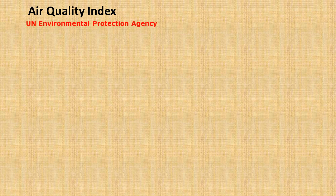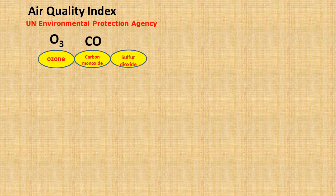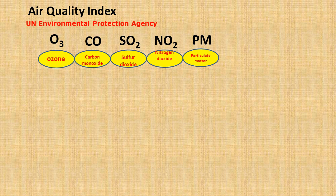The United Nations Environmental Protection Agency takes into account five pollutants while calculating this index. These are ozone, carbon monoxide, sulphur dioxide, nitrogen dioxide, and particulate matter.